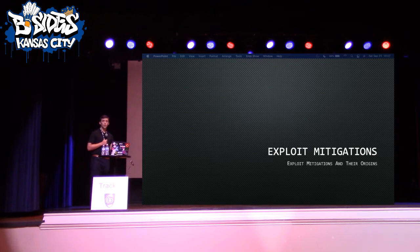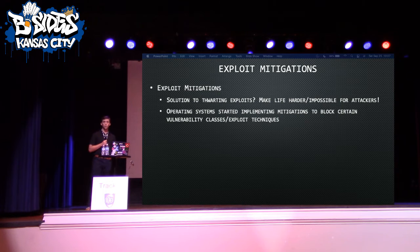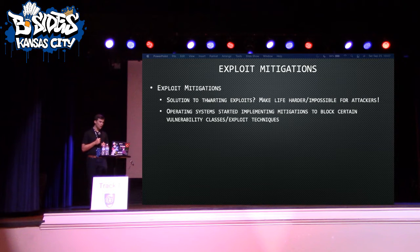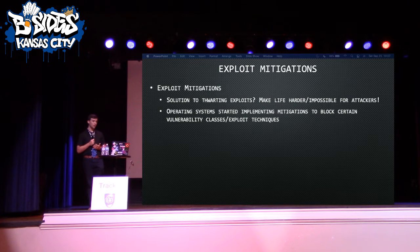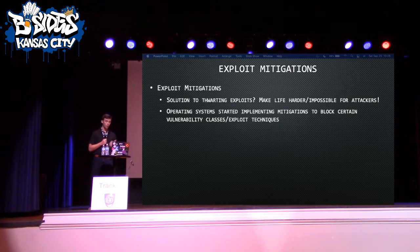With exploit mitigations, there are two roads you can go down. You can either make life impossible for an attacker — mitigating full vulnerability classes — or you can just make life a lot harder in order to raise the cost for exploits. Operating systems implement these into the OS by default in many cases, blocking certain vulnerability classes and exploitation techniques. Hopefully this talk outlines what some of these mitigations are and sheds light on some you can enable to help protect yourself better.